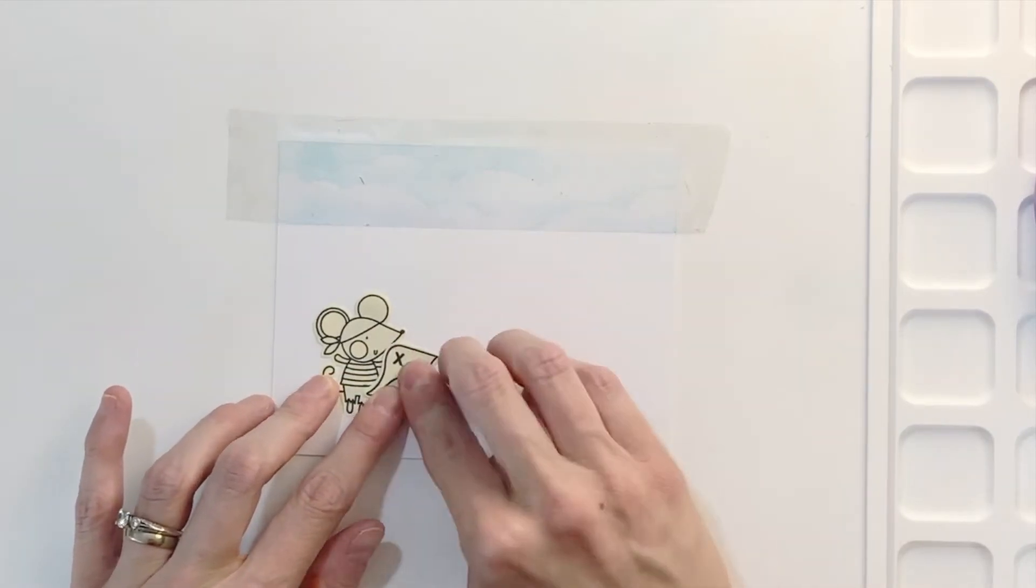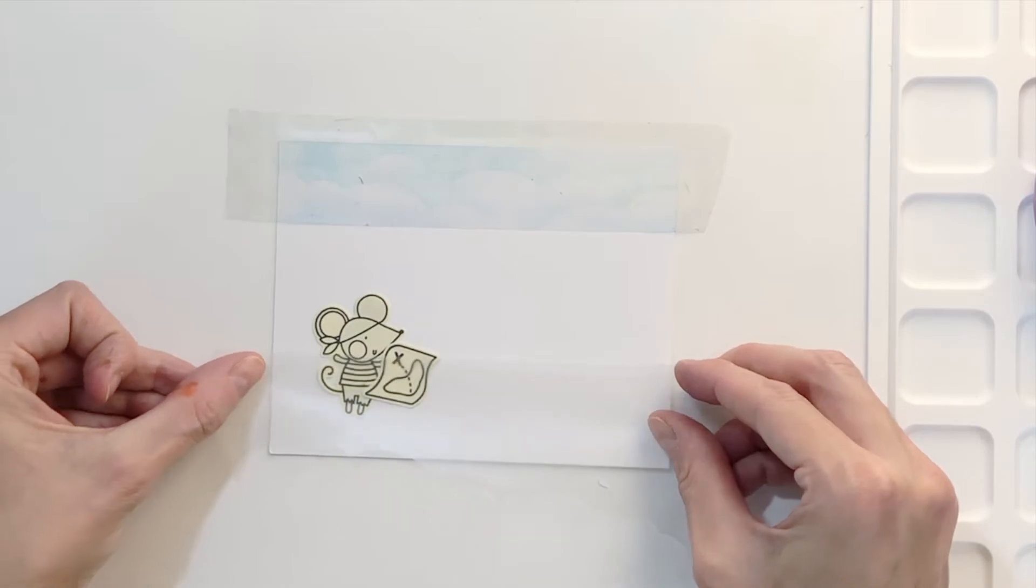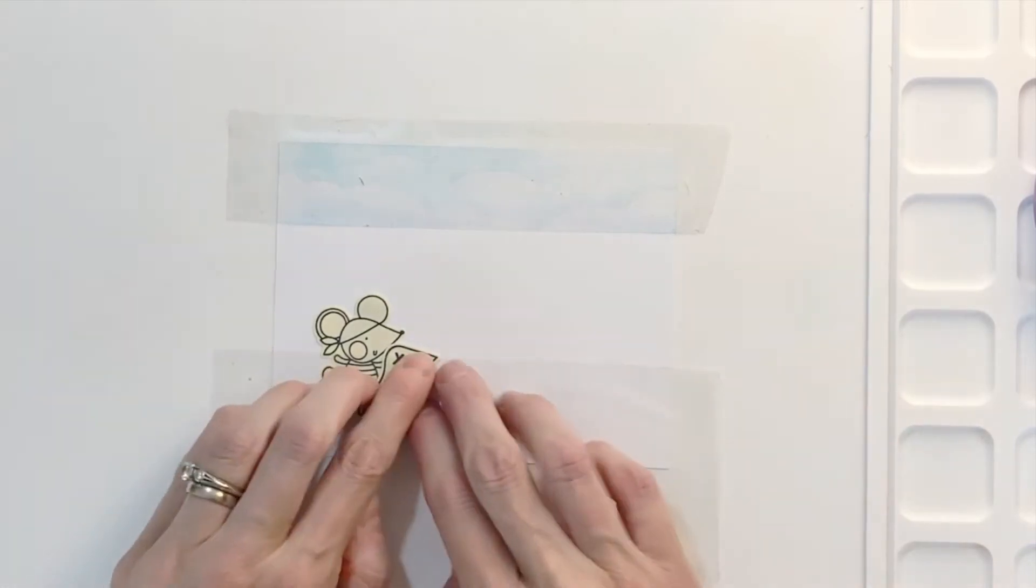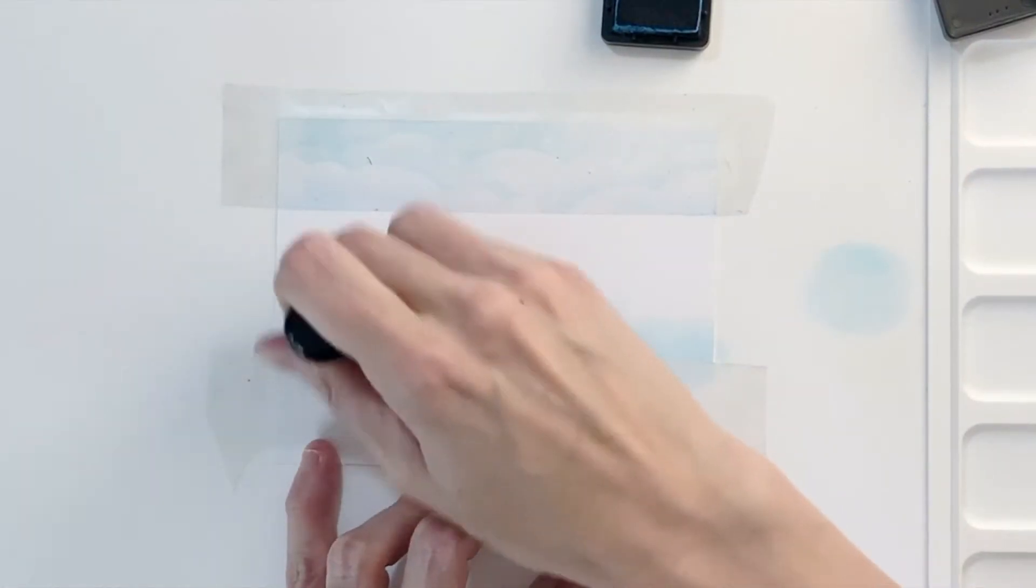These are die cut with the matching die so that leaves a nice border around them when I ink blend and create that background. That's just to make the mouse and the map consistent with my other images that are going to be in my card, so everything has that white border around it.